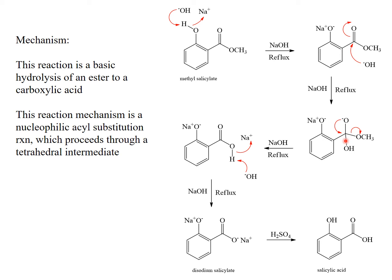If I break the hydroxide bond, we just go back to form the ester. But if I break the methoxide bond, I form the sodium salt of my carboxylic acid — the disodium salt. All I have to do now is add some sulfuric acid and protonate both of those oxygens to form salicylic acid.